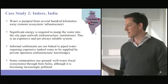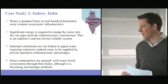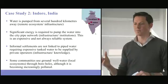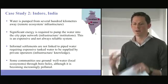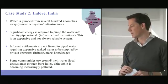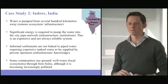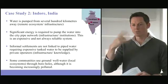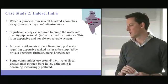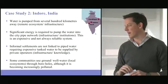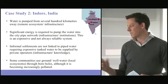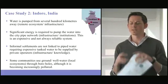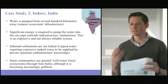So the case study from Indore in India. The water for the city is pumped from hundreds of kilometres away, huge pipelines, massive energy use. So it's a remote ecosystem, requires significant infrastructure. And if you think back to the hamburger, I'm working through some of those elements of the city. So obviously significant energy required, so there's a kind of interaction between the water system and the energy system, clearly.